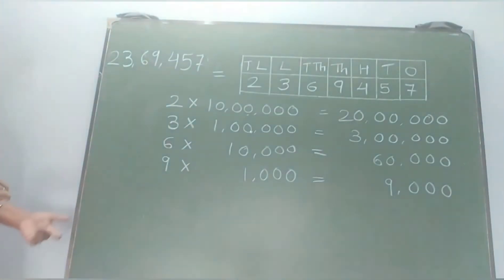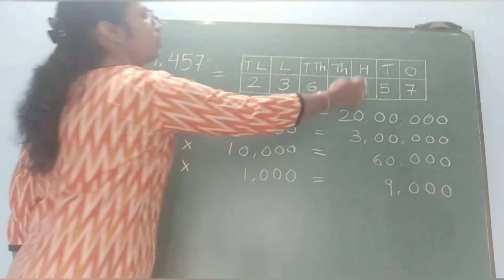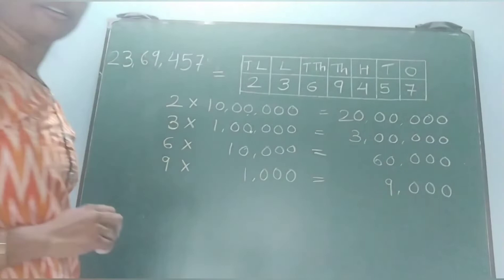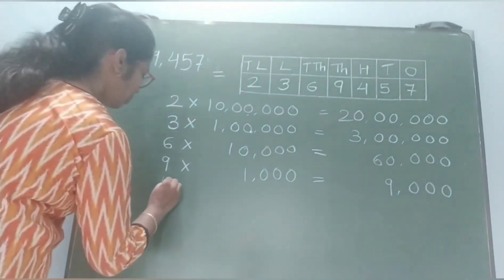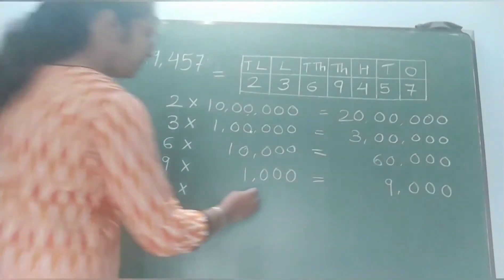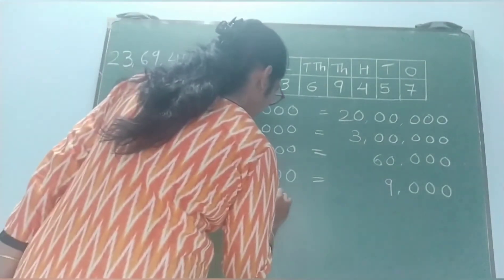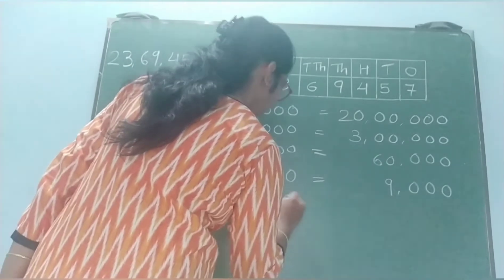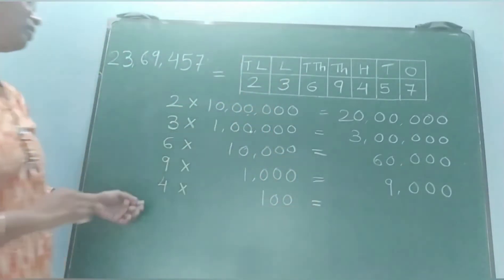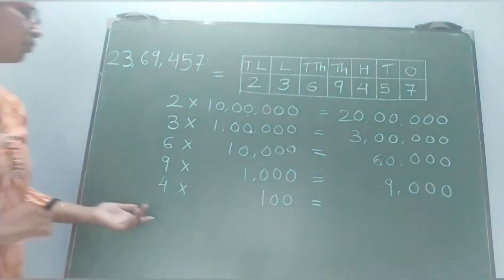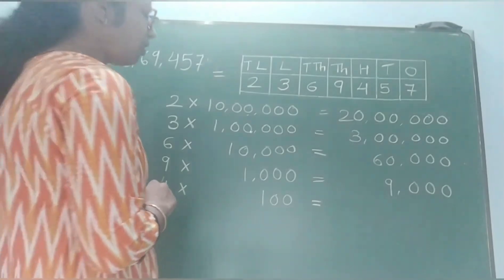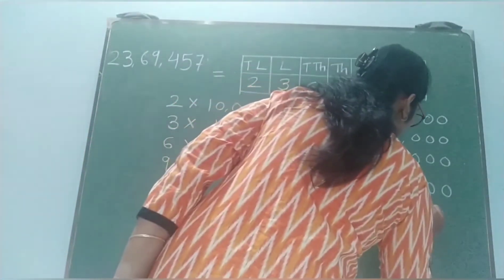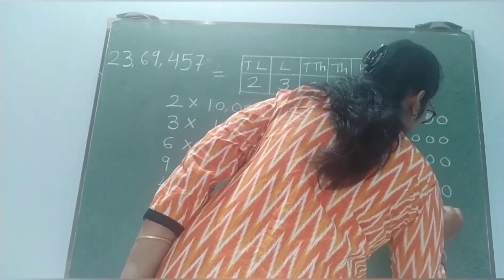Now see the next number. 4 is in the hundreds place, so 4 gets multiplied by 100. So the value of 4 is 400.